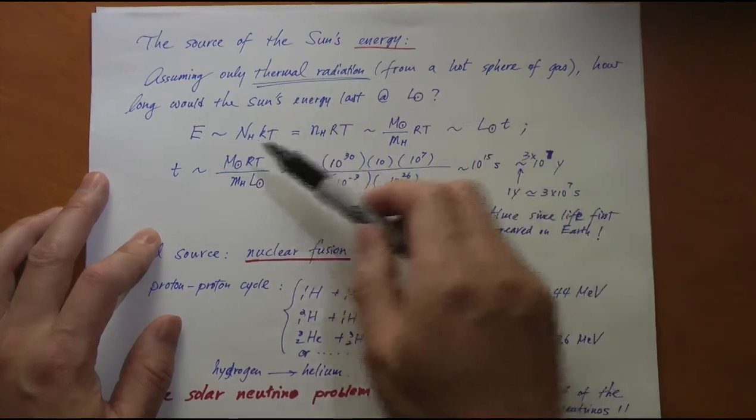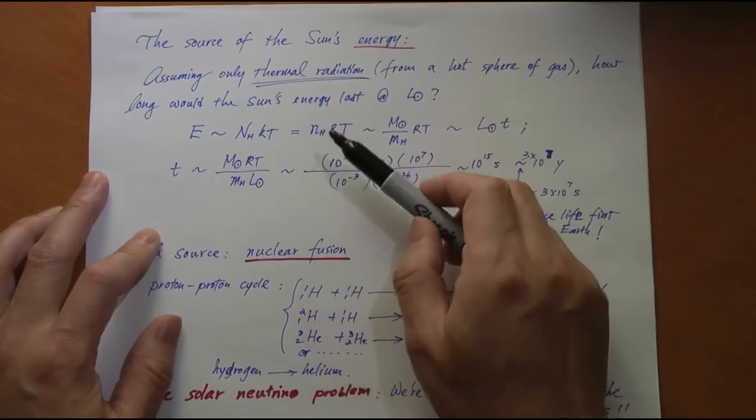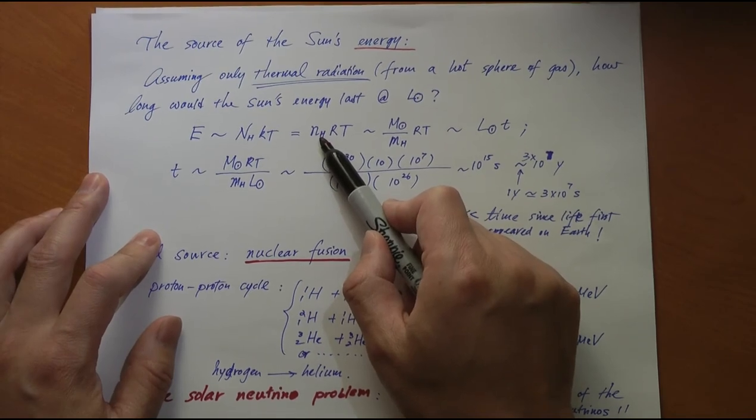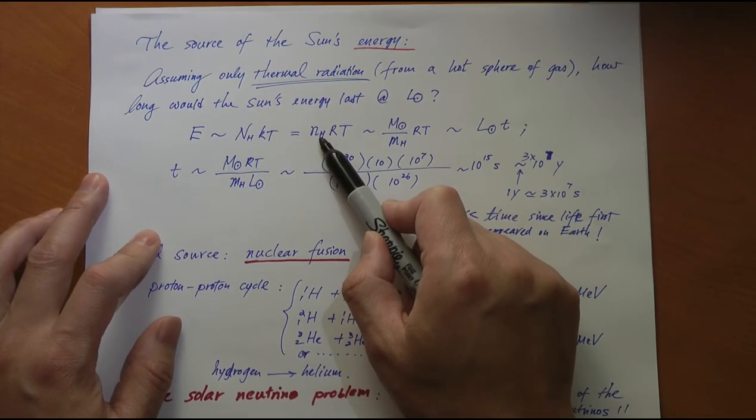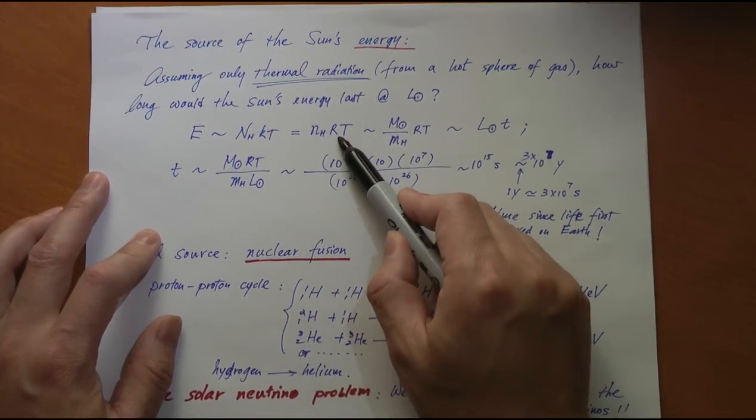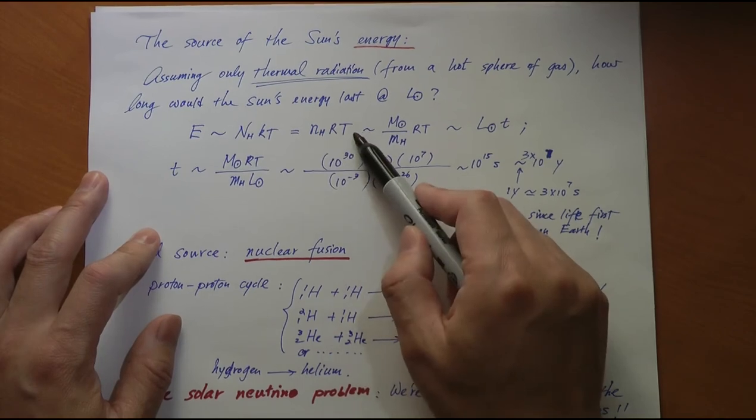I can rewrite this as the number of moles of hydrogen in the sun times R, because Avogadro's number times k is the universal constant R. And then the number of moles of hydrogen in the sun is the total mass of the sun divided by the molar mass of hydrogen, which is about 1 gram per mole times RT.